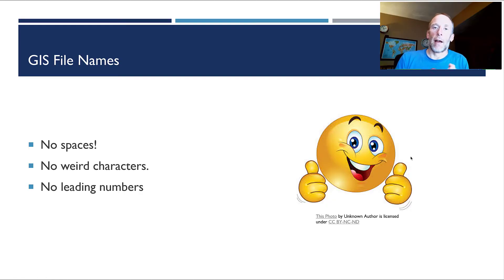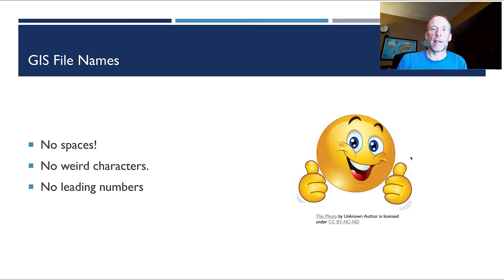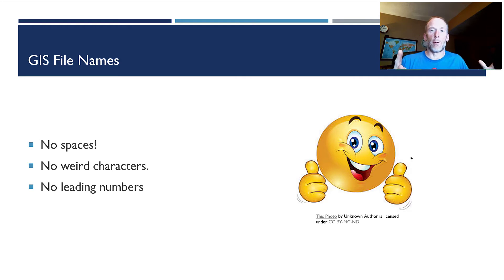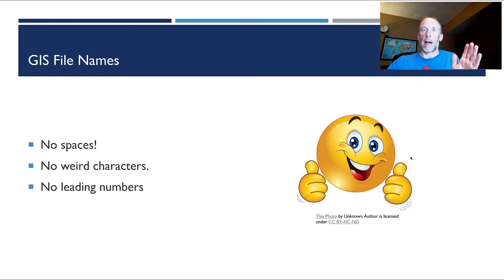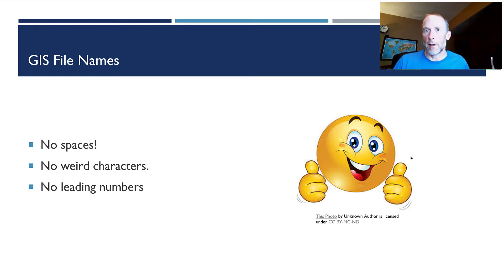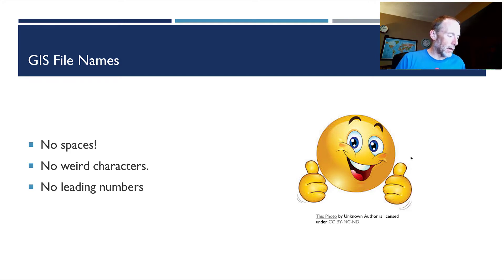Let's talk about file names. GIS is really picky about file names. Your file names for GIS — and this includes the whole path, not just the file name but everything back to the root folder — C colon slash directory name slash directory name slash all the way out to file name and extension. No spaces anywhere. No weird characters. What I mean by weird characters is basically shift plus any number.